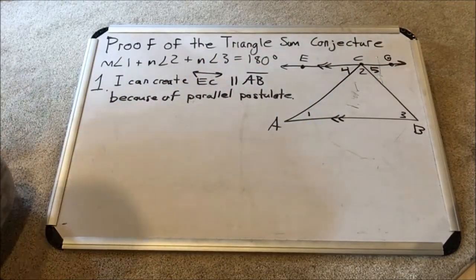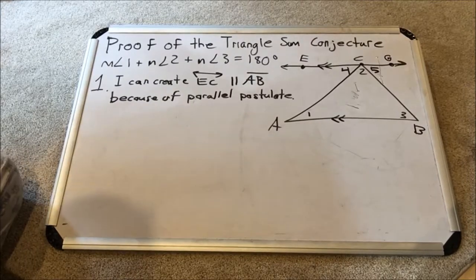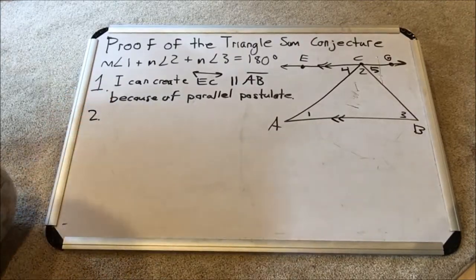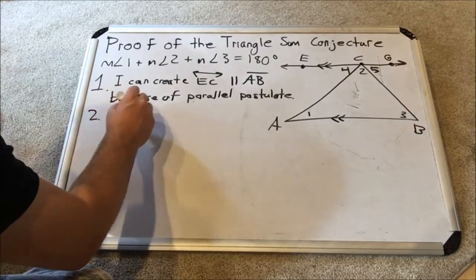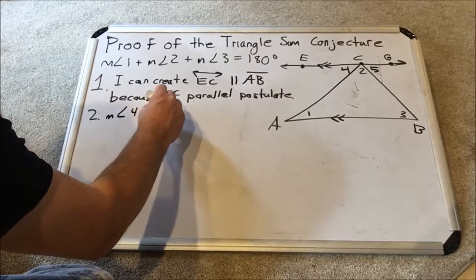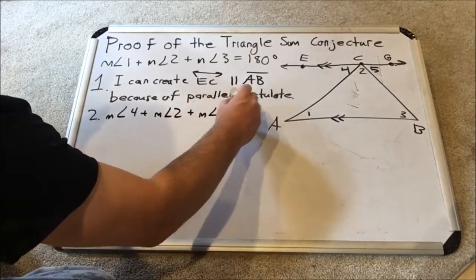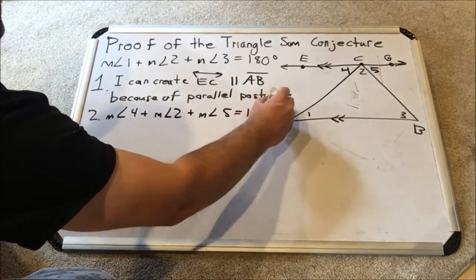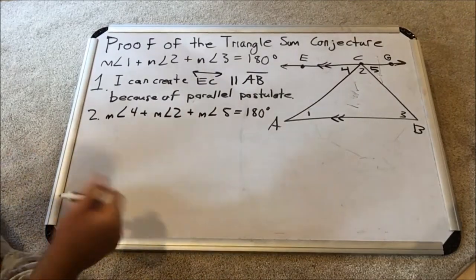These angles all add up to a straight line. These three angles. So in other words, it's a term I coined: a linear triple. So you could say that the measure of angle 4 plus measure of angle 2 plus measure of angle 5 equals 180 degrees. This is the backbone equation we use to prove our equation. Notice how similar it is.